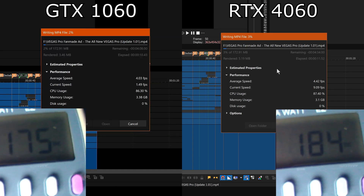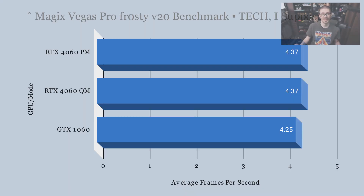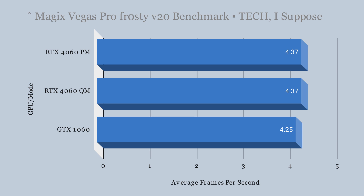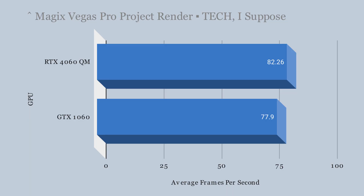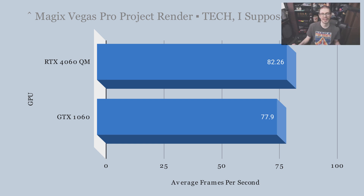Magix Vegas Pro video editor was tested using a specific benchmark project from forum members. There was a slight uplift with the 4060 rendering that project, though the difference is minimal in average frames per second. With one of my own projects tested in quiet mode only, there was a decent uplift in average frames per second.